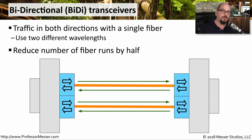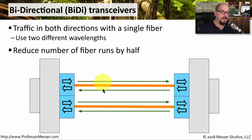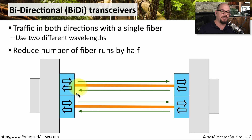That's why some of your networking equipment may be able to support bi-directional transceivers, or BiDi transceivers. These bi-directional transceivers allow you to transmit and receive over a single strand of fiber. This effectively doubles the amount of use that you have for the fibers in your infrastructure, using two different wavelengths to complete this, so you don't have to run twice as much fiber. Instead, you can use a bi-directional transceiver.